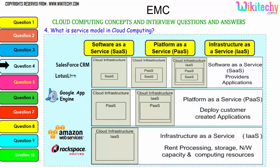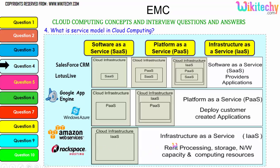Further explaining the models: Software as a Service has the cloud infrastructure software placed in the operating system and infrastructure. For Platform as a Service, a platform OS is given which is placed in your server - you can put any application or software you want. For Infrastructure as a Service, the server is given to you and you choose whatever OS and applications you want. Examples for SaaS include Lotus Live and Salesforce CRM; for PaaS, Windows Azure and Google App Engine; for IaaS, Amazon Web Services and Rackspace Hosting.